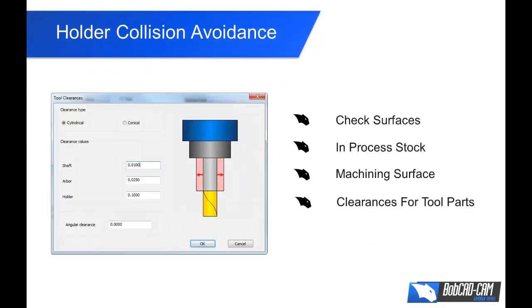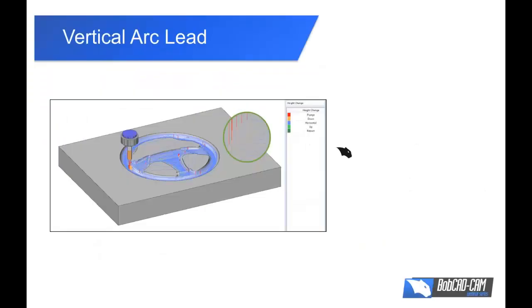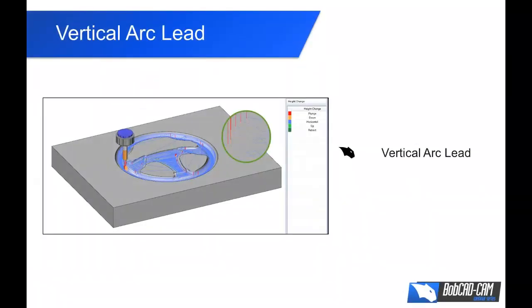For holder collision avoidance, I'll do a review with check surfaces, talk about the new in-process stock feature, cover the differences between in-process stock and machining surfaces, and review the clearances for your tool parts. For adaptive roughing, we've added a vertical arc lead in and out option, so I'll show you where to turn that on and review some of the simulation options for the toolpath.